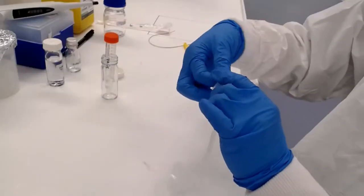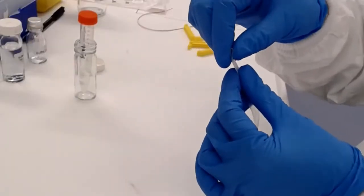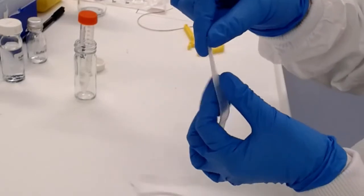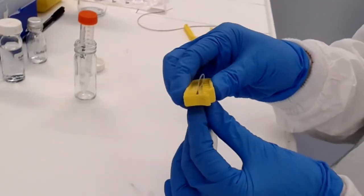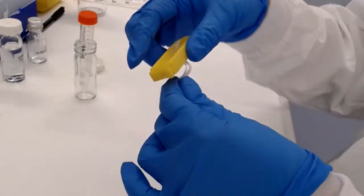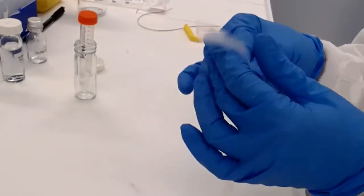Here's our dialysis tubing. This contains a membrane that has very small pores in it that are going to retain our protein on the inside, but the salts are going to go through into the outside solution. We double over the end of the tubing and clip it tight into one of the yellow dialysis clips.